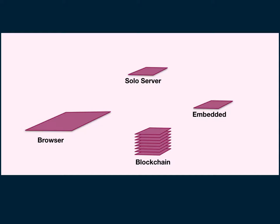JavaScript runs on a variety of hosts. There are four primary kinds of hosts represented on the committee: the browser, the single-machine server which is primarily Node, embedded devices, and now blockchain. On all of these, SES is now a major factor and has gotten major adoption and relevance.